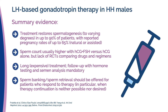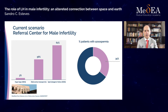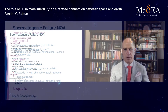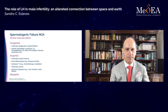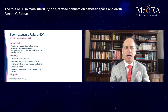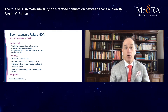Unfortunately, hypogonadotropic hypogonadism is not common in clinical practice. At our center, Androfert, it corresponds to only 3% of azoospermic patients. In most cases, our azoospermic patients have non-obstructive azoospermia due to intrinsic testicular failure, which is much more common. This includes congenital cases like Y-chromosome microdeletions, Klinefelter syndrome, and cryptorchidism, as well as acquired cases like mumps orchitis, chemotherapy, radiotherapy, and idiopathic cases.